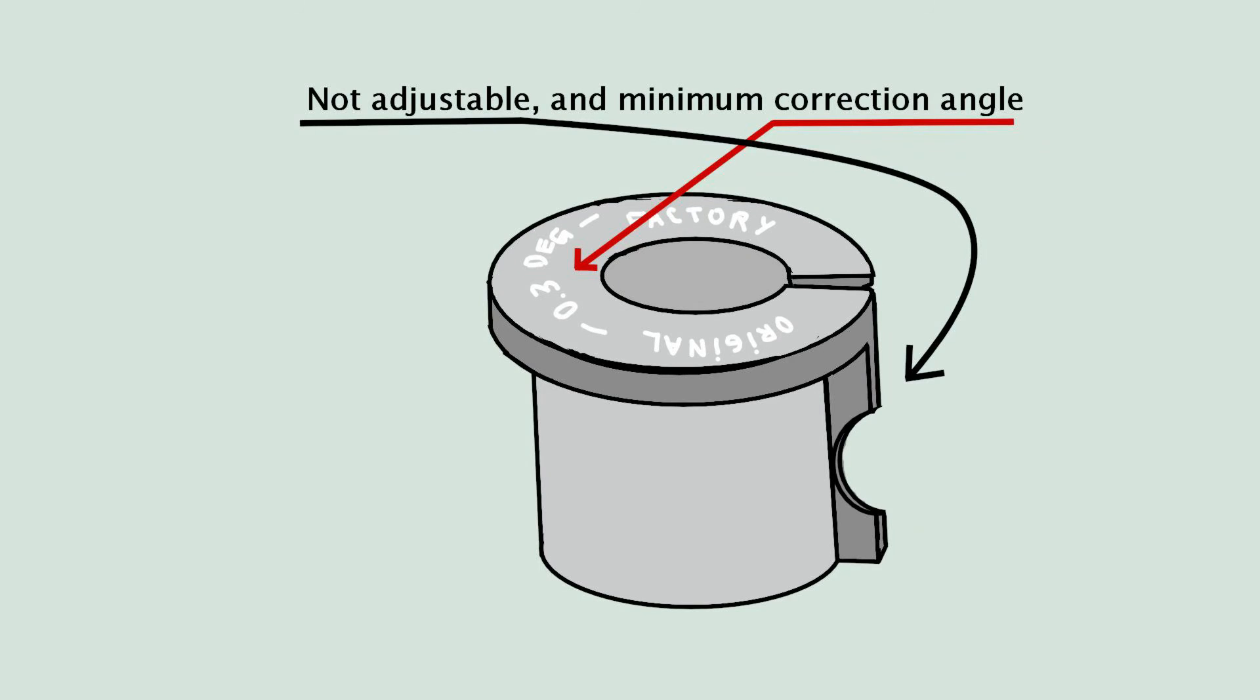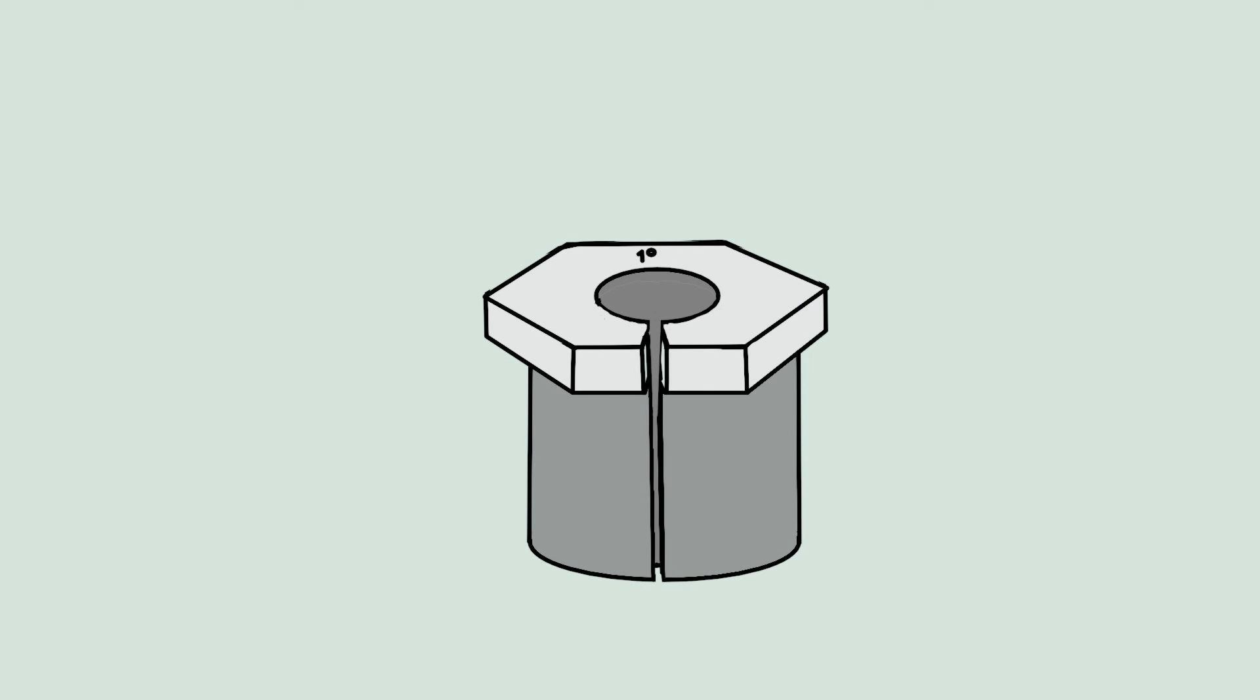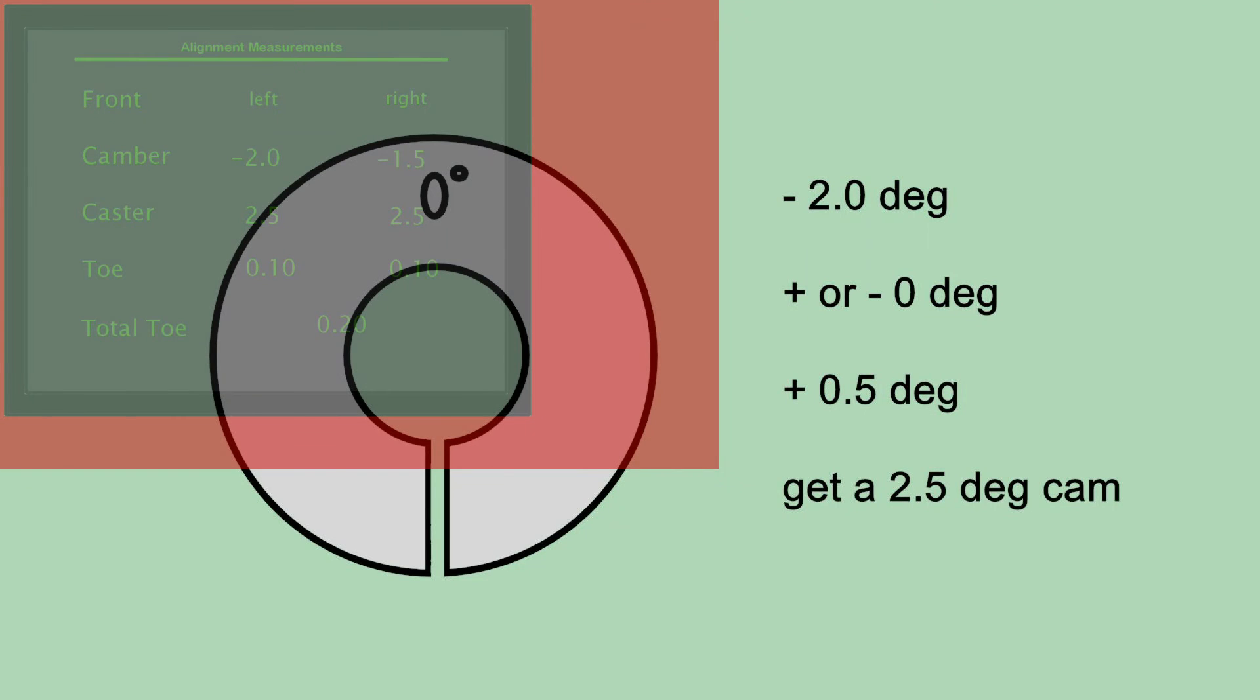Then we look at the factory or aftermarket sleeve, and write down the angle and position of the cam. If the angle is zero, then just get a sleeve with the value of your initial alignment readout, plus 0.5 degrees.